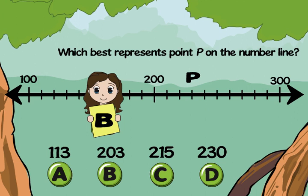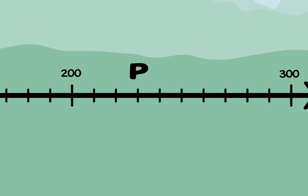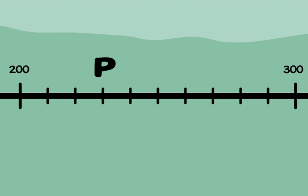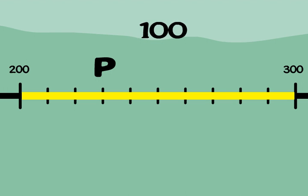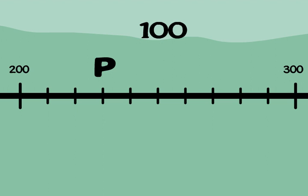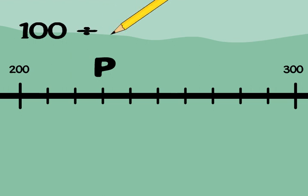Let's see if you're right. Step 1: Let's find the benchmarks and the interval. I see 200 and 300, so the benchmark interval is 100. Step 2: Now let's count the number of equal segments between the benchmarks: 1, 2, 3, 4, 5, 6, 7, 8, 9, 10. I count 10. 100 divided by 10 is 10, so each segment is 10.